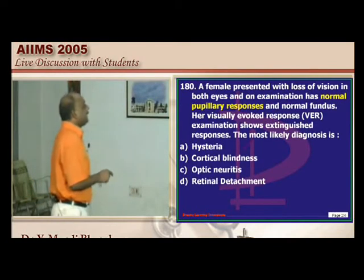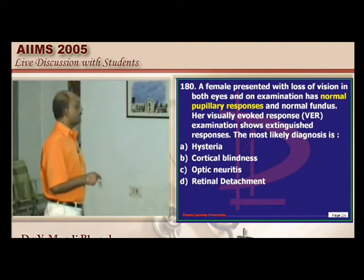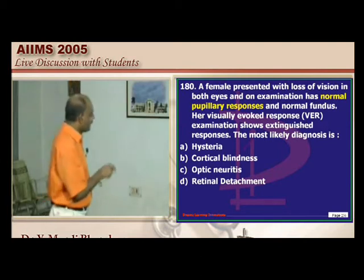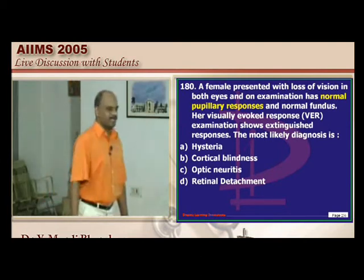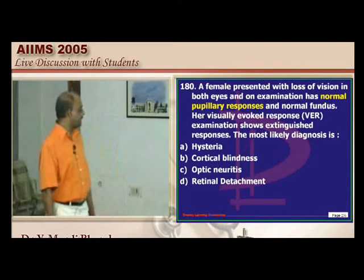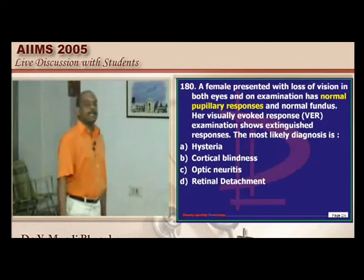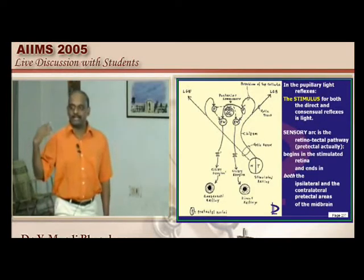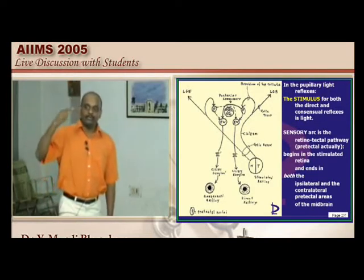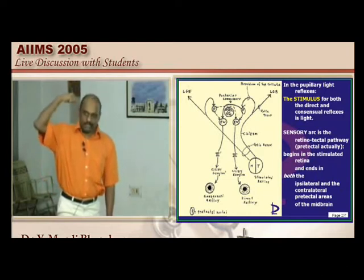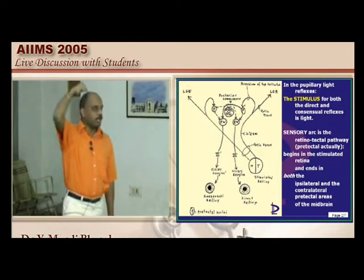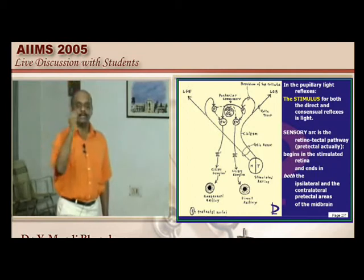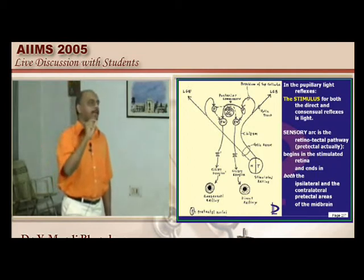Normal pupillary response with blindness indicates cortical blindness. Peripheral lesions produce both pupillary reflex defect and blindness. In cortical blindness, the pupillary reflex is not affected — throwing light causes the pupil to constrict normally.